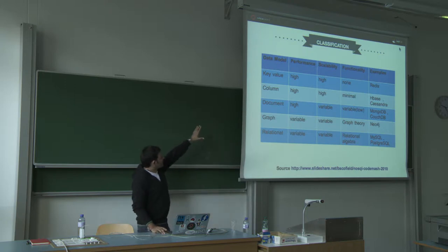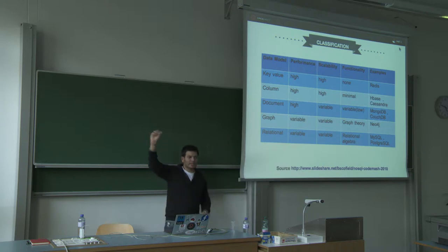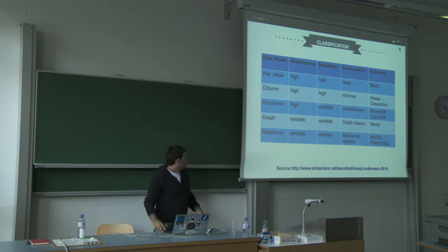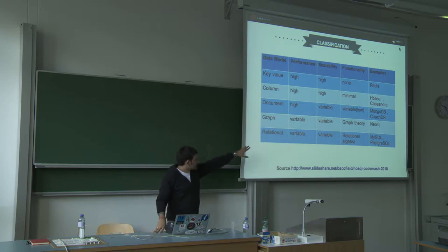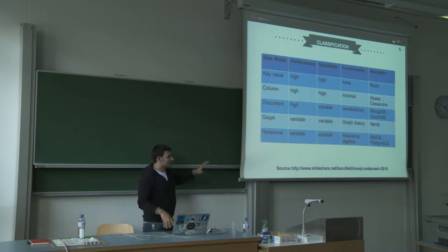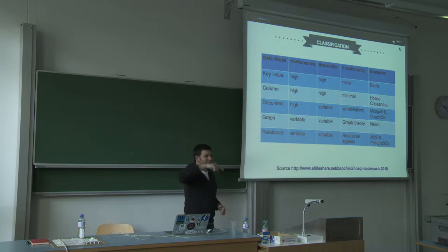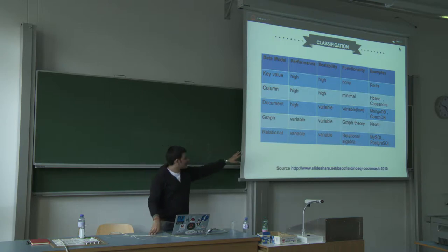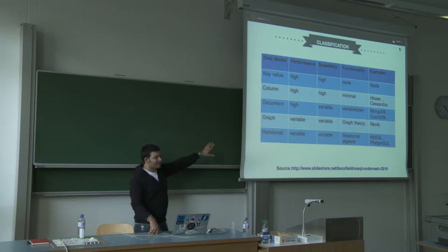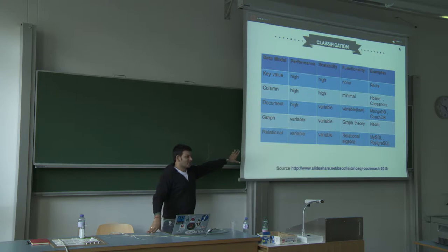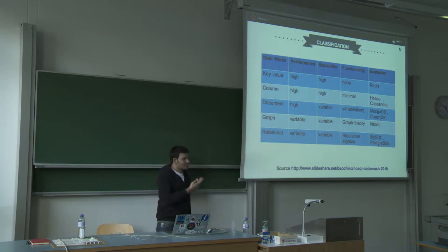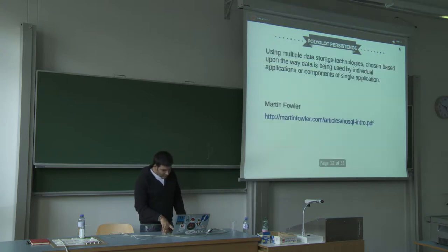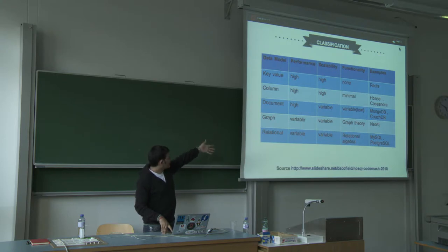Document stores look like key-value stores, but you can also search on the value. You can have a key like a name and a value with attributes, and search on those attributes. They are the closest to relational databases — if you're trying to replace a relational database, document stores are your best fit. MongoDB is the primary example. Graph databases are useful for recommendation engines — if I follow someone and they follow another person, the system can tell me who I should follow. However, graph databases are not designed to be scalable; they work on a single machine, which is their main limitation.